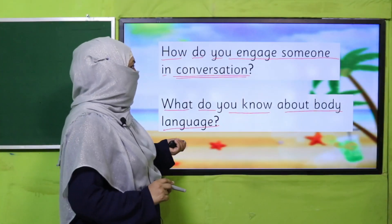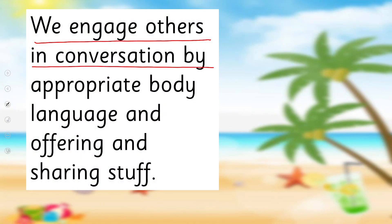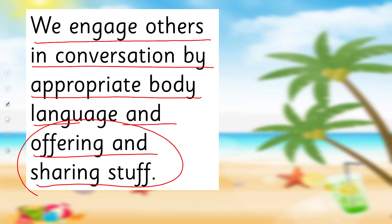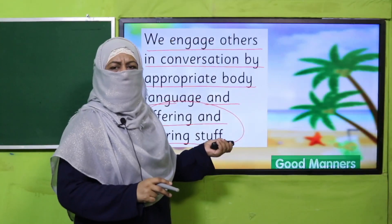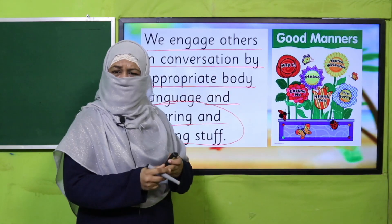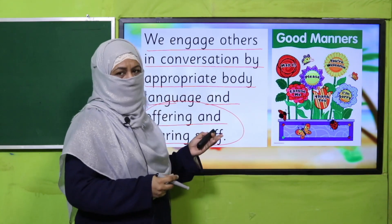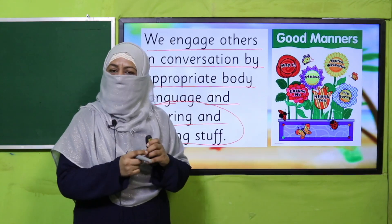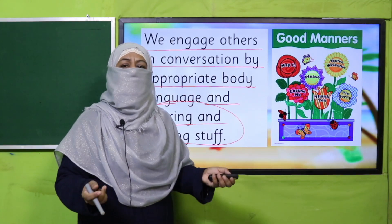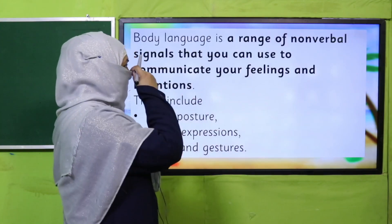I hope you could answer correctly. We engage others in conversation by using appropriate body language and by offering and sharing things. Whatever we say, we always use good words and remember our good manners. If you want someone to talk to you: 'Please talk to me,' 'Please look at me,' 'Please take this,' 'Please give that.' This is how we make others participate in conversation. And when we say body language...